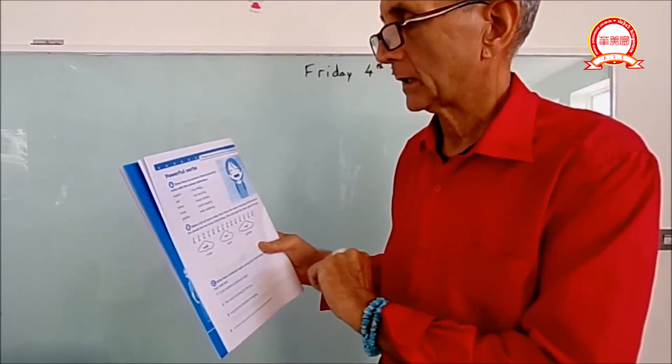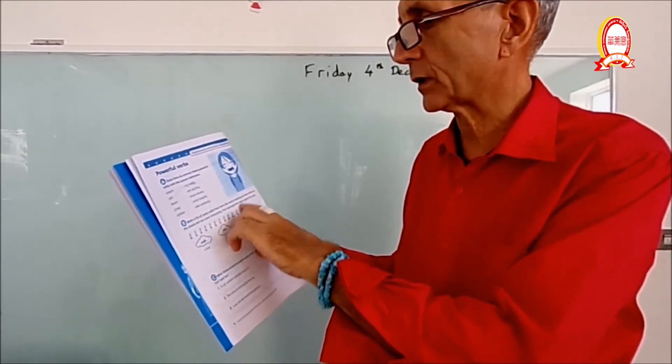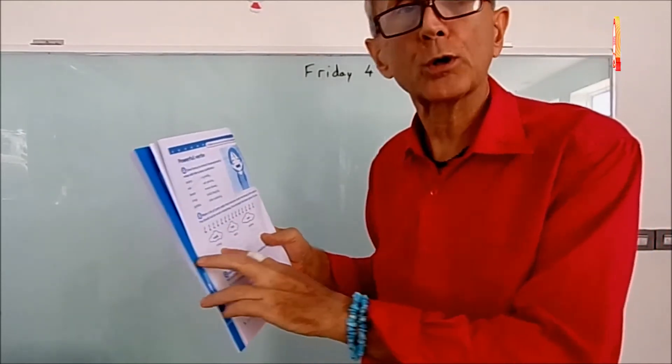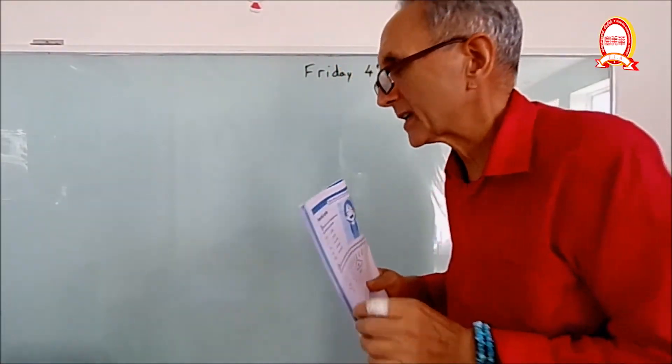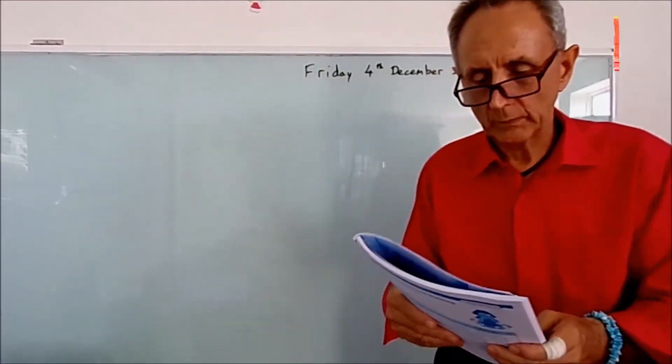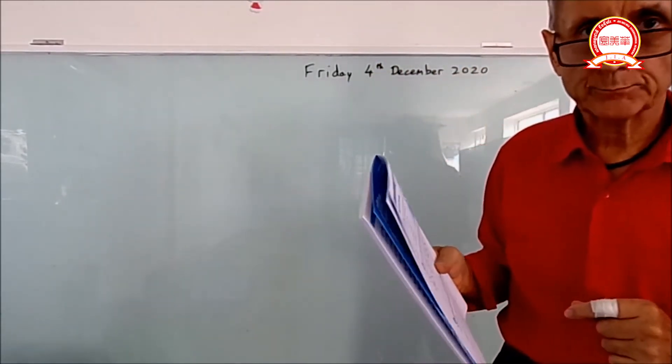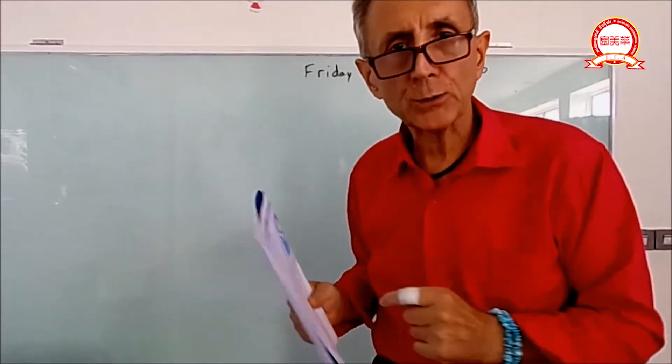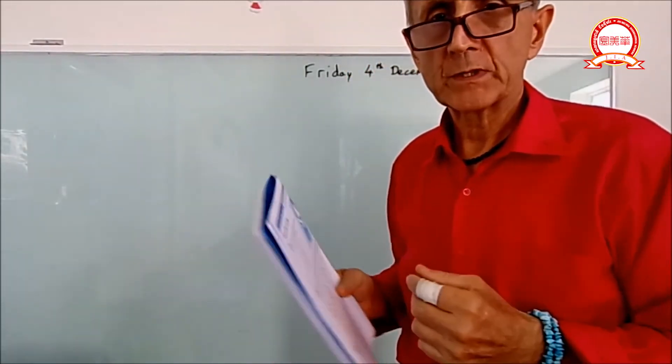Now make a list of some verbs that have the same meaning as the verbs in the clouds but are more interesting. One example has been given for you. So walk: you've got creep, you can creep, you can sneak, you can slink, you can run, you can dash, you can whizz around. You can eat, you can gobble, you can stuff your mouth.